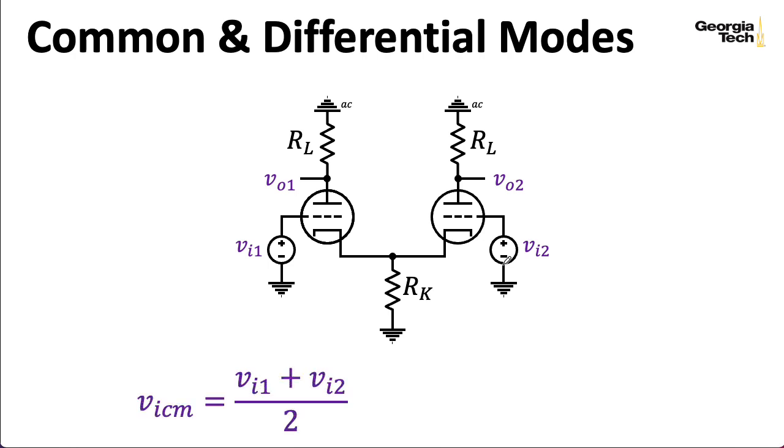So let's say that we will define a common mode input as the average of VI1 and VI2. And we're also going to define a differential mode input. Usually people just say differential and not differential mode. But when they say common, they always say mode with a common. So I'm kind of sticking with that in terms of how I'm notating it.